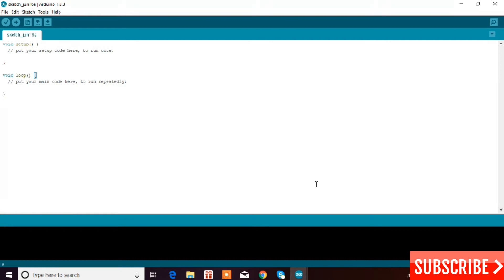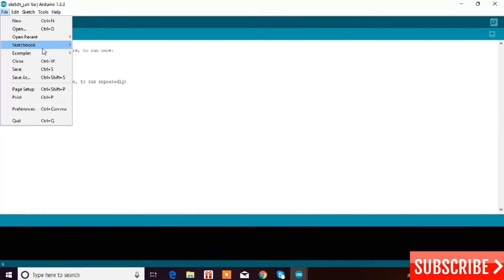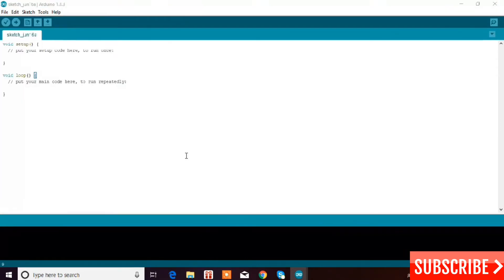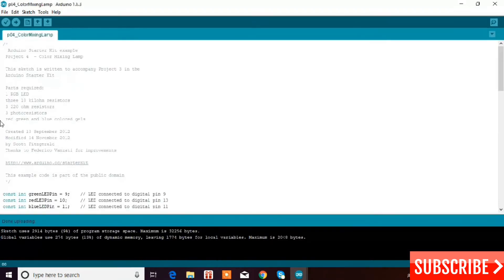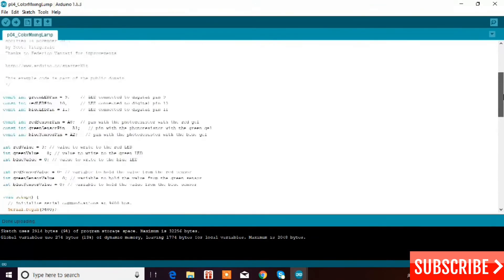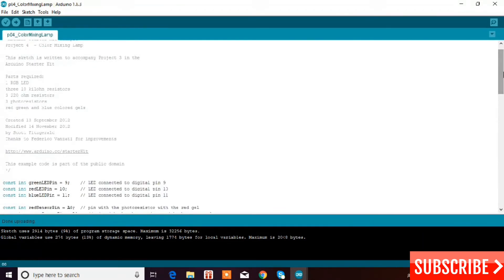How to upload the code into Arduino Uno to make this color mixing lamp work. First you have to go to File, go to Examples, Starter Kit, Color Mixing Lamp, and the window is already opened over here. I have already opened it. This code is pre-existing.